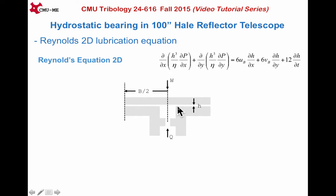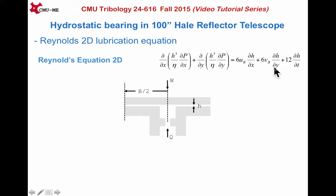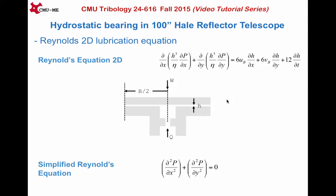Let's try to simplify this equation by taking into account the actual problem at hand. Squeeze effects can be neglected as we can assume the problem to be quasi-steady. The wedge terms are zero as the film thickness doesn't change along the sill length. Thus, the 2D Reynolds equation simplifies to the following equation — that is, the pressure inside a square hydrostatic bearing obeys Laplace's equation.